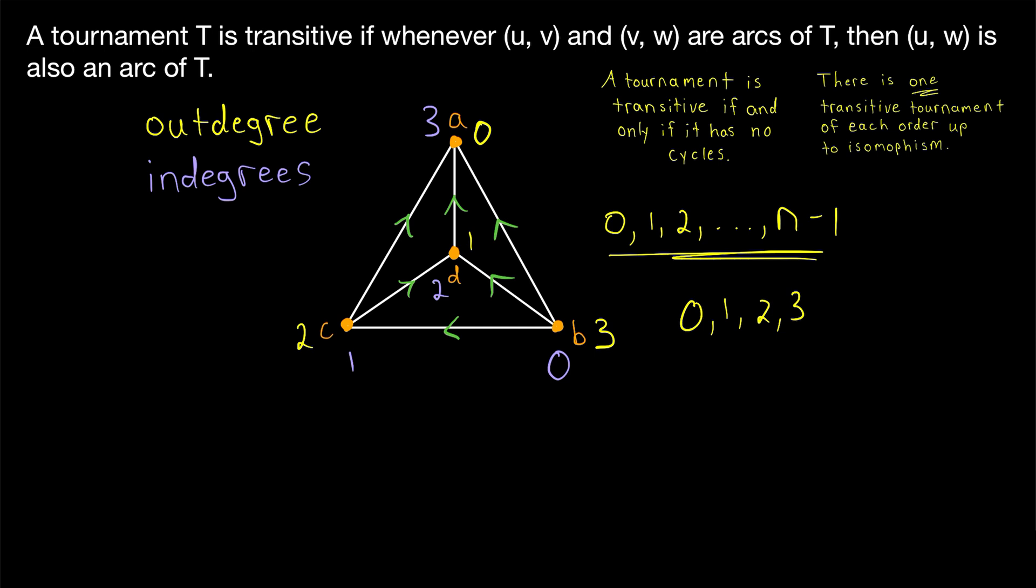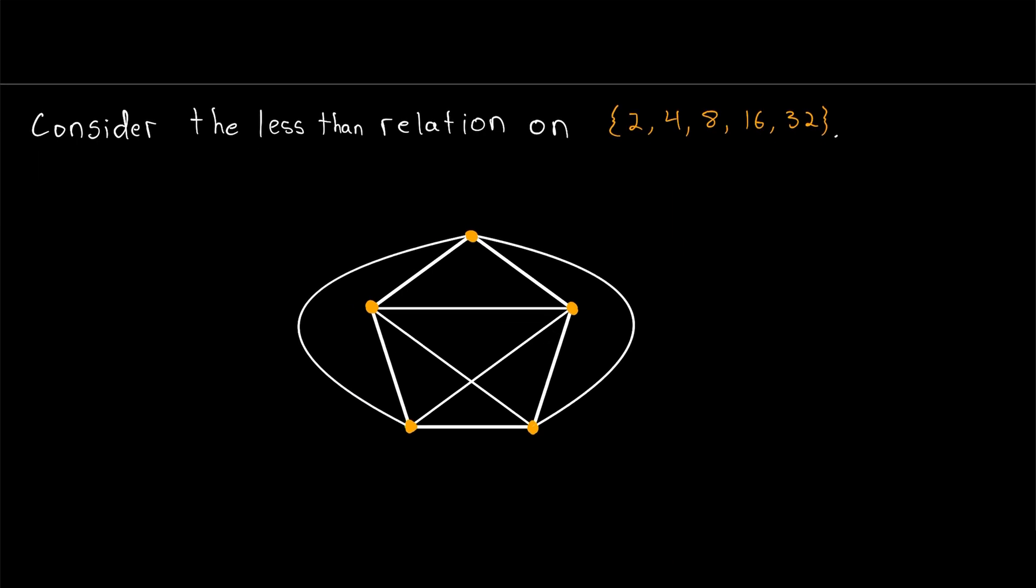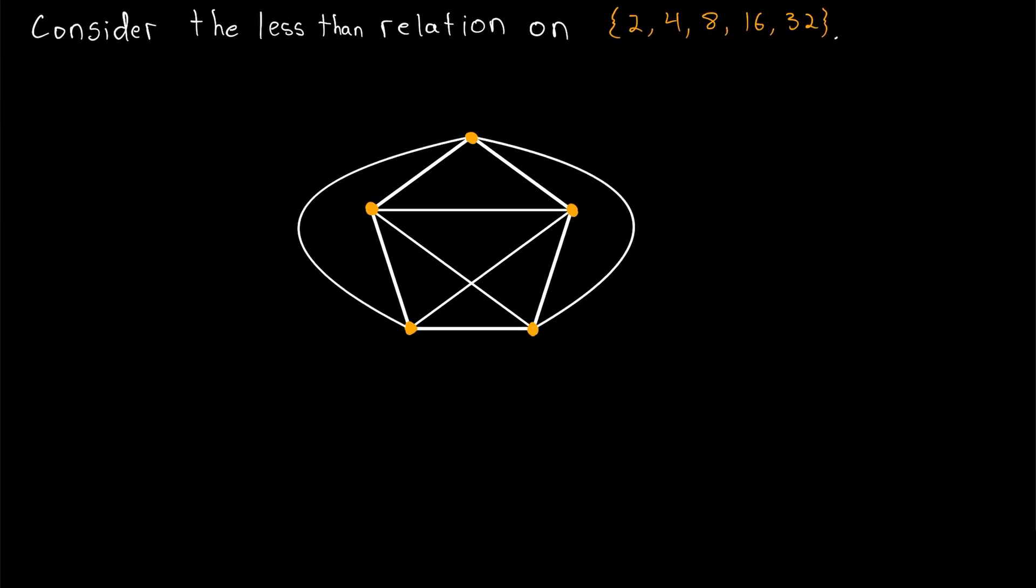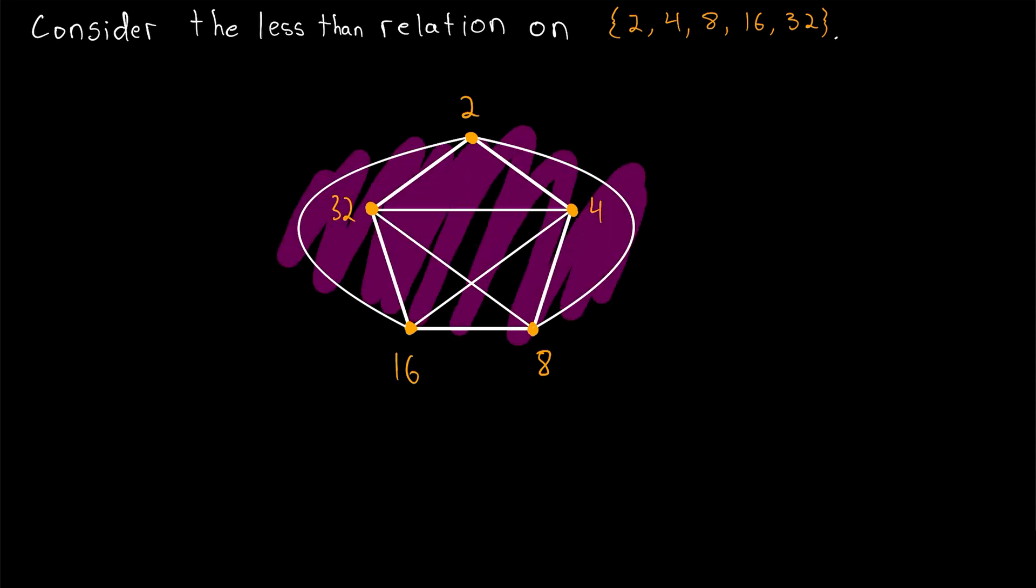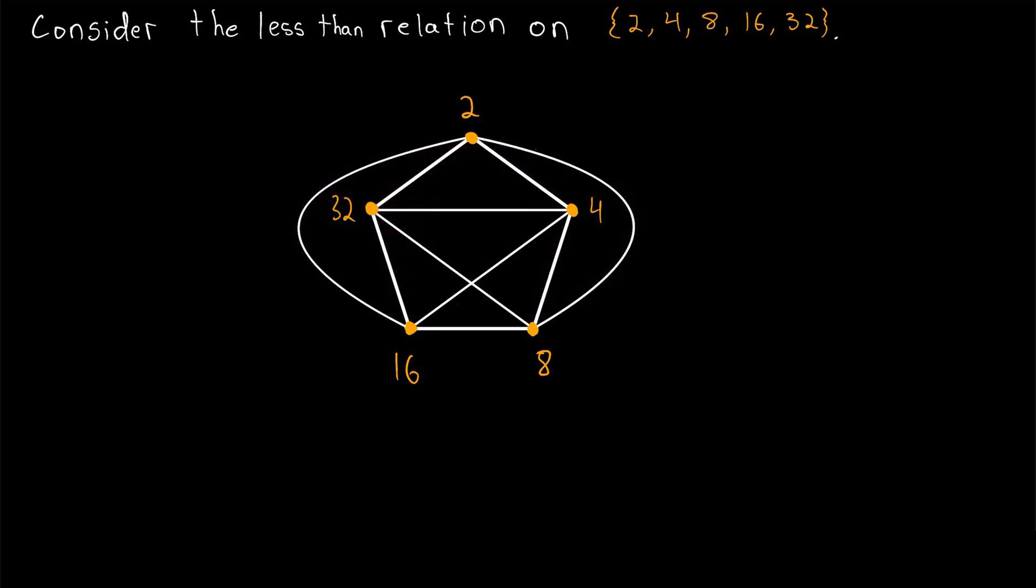The last thing I want to mention is since graphs model relations between objects, if we used a graph to model a transitive relation between objects, you would think that we would get a transitive tournament, perhaps. And there are a few more details you have to account for besides just having a transitive relation, but here's an example where we'll turn a transitive relation into a transitive tournament. So consider the less than relation on this set of numbers: 2, 4, 8, 16, and 32. We can represent each number with a vertex. Notice I've already given us a complete graph here with 5 vertices.